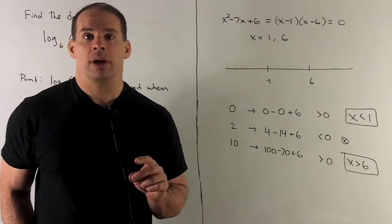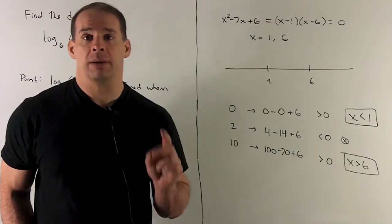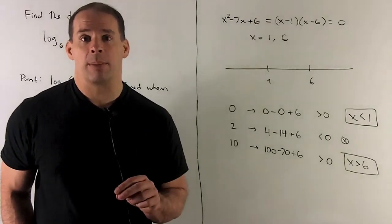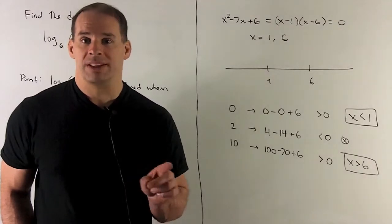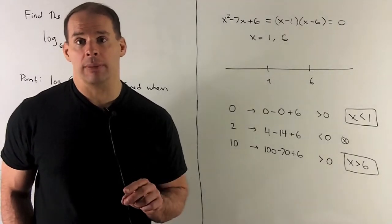If I use 2, I'm going to have 4 minus 14 plus 6. That's a negative number. We can't use that. It's going to be negative on the whole region, so I discard it.